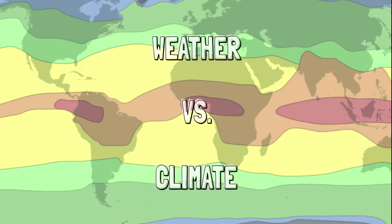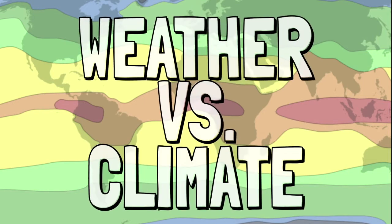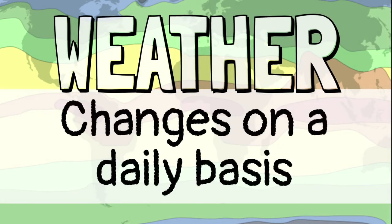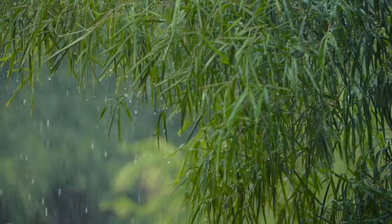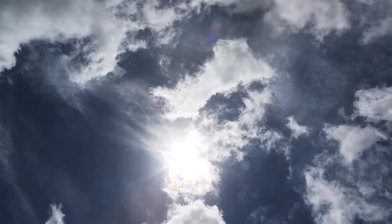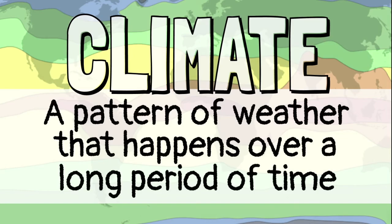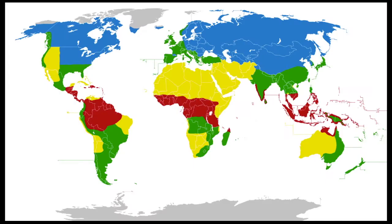There's a difference between weather and climate. Weather changes on a daily basis — it might rain today and be dry and sunny tomorrow. Climate is a pattern of weather that happens over a long period of at least 30 years.